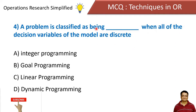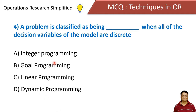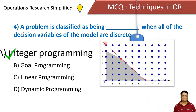A problem is classified as blank when all of the decision variables of the model are discrete — meaning they cannot have a fractional value. Options: integer programming, goal programming, linear programming, and dynamic programming. Correct answer is integer programming. In integer programming, our decision variables can take only discrete, that is integer, values. It cannot take fractional values.